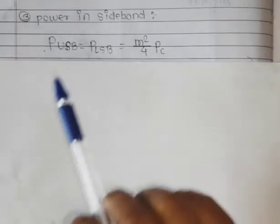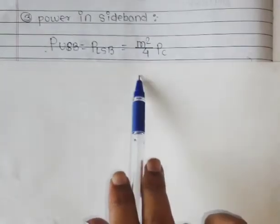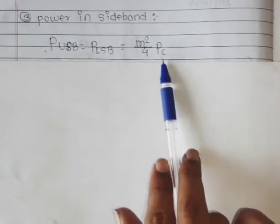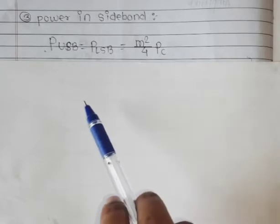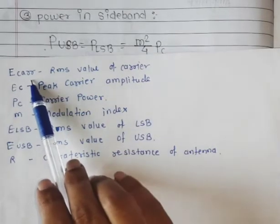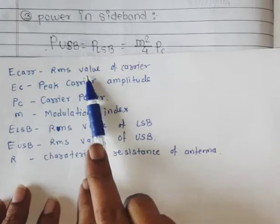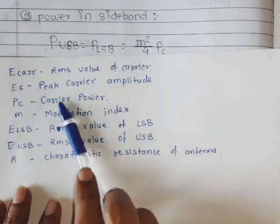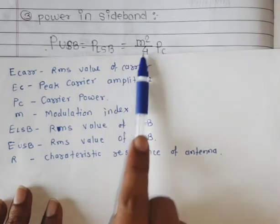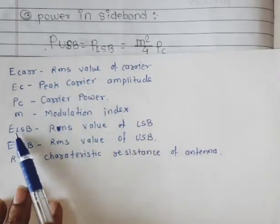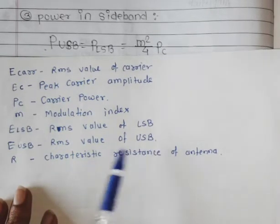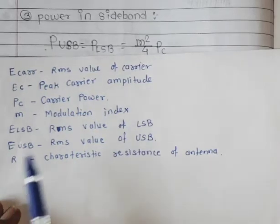Next is the power in sidebands — both upper sideband and lower sideband. The formula is m squared divided by 4, multiplied by PC, where PC is the carrier power. To summarize the variables: E_carrier is the RMS value of the carrier, EC is the peak carrier amplitude, PC is the carrier power, m is the modulation index, E_LSB is the RMS value of the lower sideband, E_USB is the RMS value of the upper sideband, and R is the characteristic resistance of the antenna.